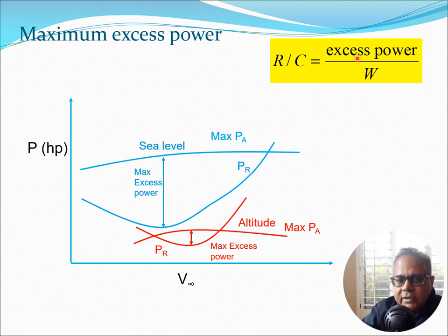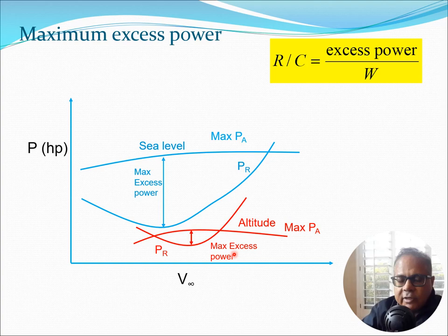Remember the rate of climb is excess power divided by weight, which we derived in a previous lecture, and you can get this value at sea level. Now if we go to a certain height, the same curves are present — the max PA curve and the power required curve — but they have shifted considerably because the density is very different due to the standard atmosphere. The maximum excess power at altitude corresponds to a different velocity, and this excess power is much less than what you obtained at sea level.